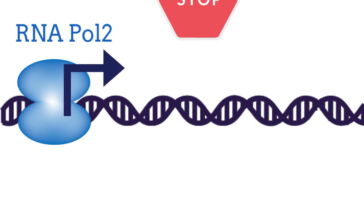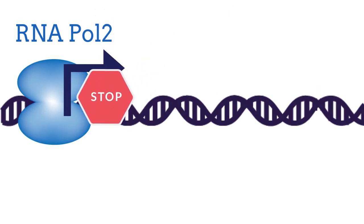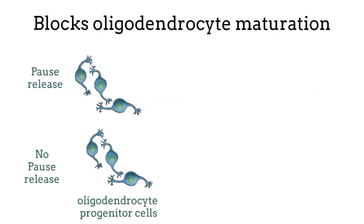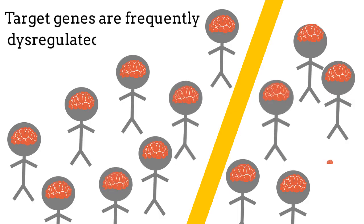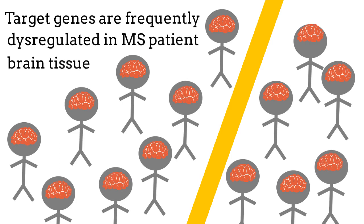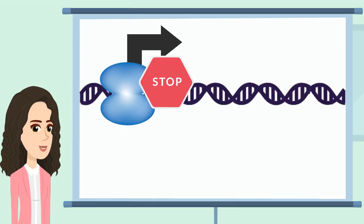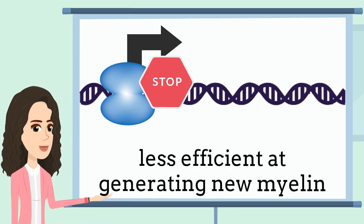Further functional studies revealed that inhibition of transcriptional elongation is a dominant pathway blocking oligodendrocyte maturation and the development of new myelinating oligodendrocytes. Furthermore, we found pause release factors to be frequently dysregulated in MS patient brain tissue. These results suggest that some individuals may be predisposed towards increased transcriptional pausing, and therefore be less efficient at generating new myelin.